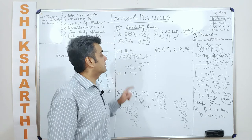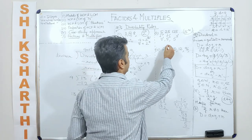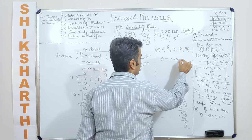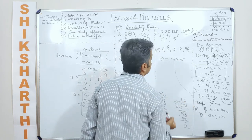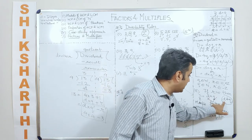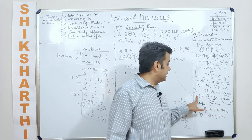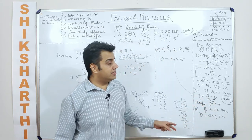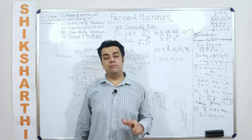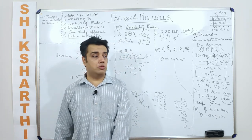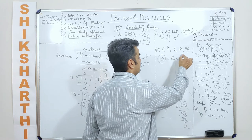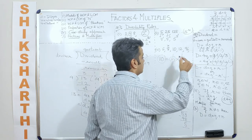For divisibility by 10: write the prime factorization — 10 = 2 × 5. A number divisible by 10 must be divisible both by 2 and by 5. Conversely, a number divisible both by 2 and 5 is divisible by 10. This is the divisibility rule for 10, decided by these two prime factors.